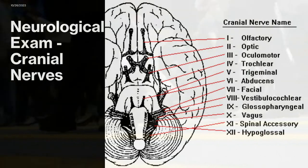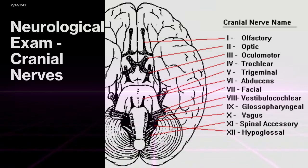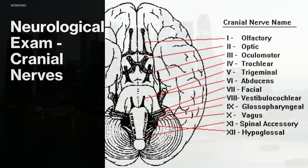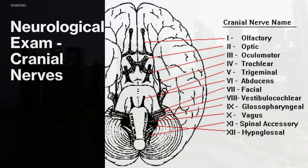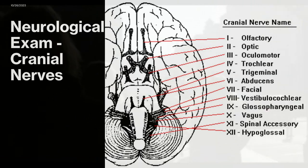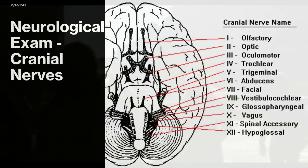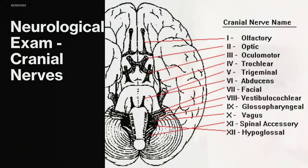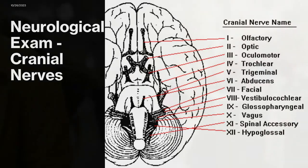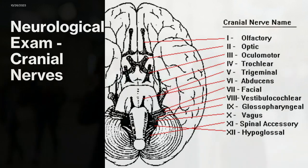Cranial nerves three, four, and six are lumped together as they provide integrated control of eye and eyelid movement — the extraocular muscles. Have the person hold their head still and look at the ceiling, floor, and left to right without moving their head. Alternatively, hold up a finger on one hand and a thumb on the other and have them move their eyes between the two. Double vision — a result of eyes not moving together — can signal disruption in these nerves.